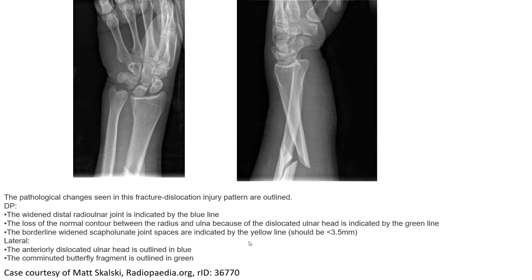In conclusion, we see the fracture of the radius displaced with dorsal displacement of the distal fragment. This is the Type 2 Galeazzi fracture dislocation.